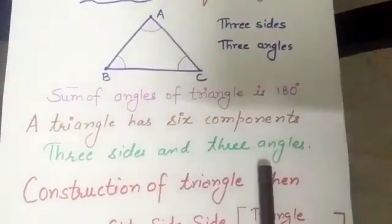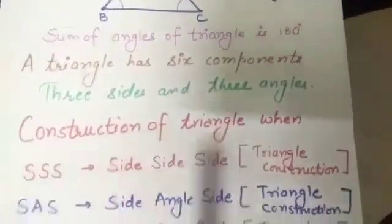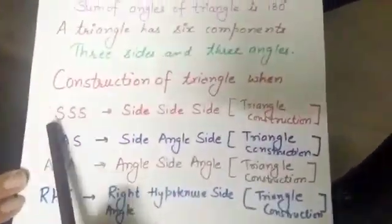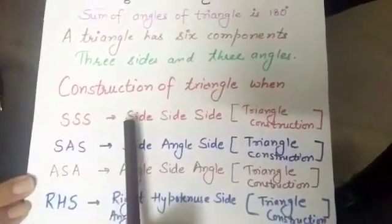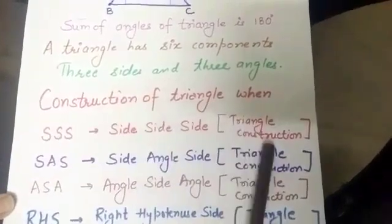But for construction of triangle, we need three components. Construction of triangle when first condition we have to discuss that is SSS. S stands for side when all the three sides are given to us that is by SSS triangle construction.